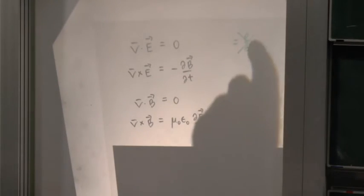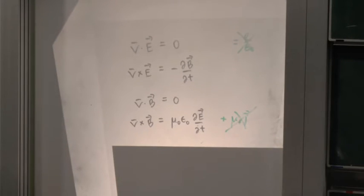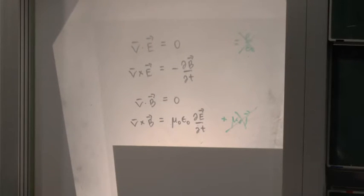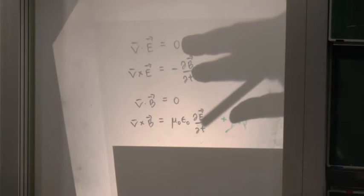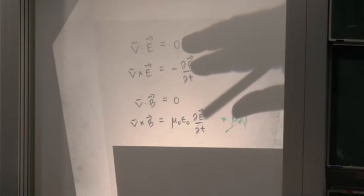Maxwell's equations in free space are emphatically not the full set - we drop the source terms ρ and J. These four free-space equations - with no charges, no currents - do not say nothing is happening. There's a non-zero curl to both fields, and the electric and magnetic fields dynamically couple with each other even in the absence of the sources that created them. When you combine this set of four equations you get a dynamic wave equation.